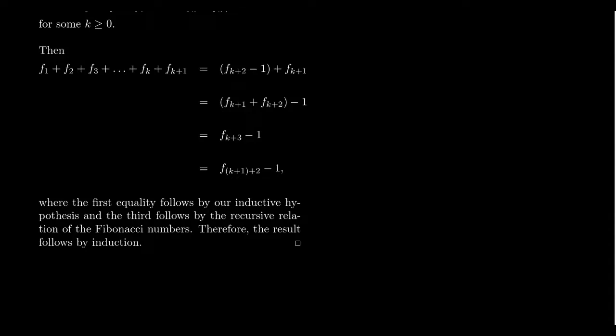What this Fibonacci proof illustrates is that recursion and induction are basically the same thing — two sides of the same coin. We can define sequences using recursion and prove things about that recursion using induction. Anytime someone does something with recursion, they're using the principle of mathematical induction whether they know it or not. And anytime you do anything with induction, you could convert it into an argument using recursion. From the mathematical point of view, recursion and induction are completely equivalent.